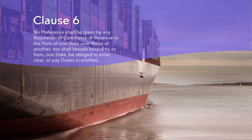Clause 6 is also known as the No Preference Clause for ports. It prohibits Congress from favoring one state over another in terms of commerce or revenue by regulating the ports or imposing duties on vessels. This clause was intended to prevent discrimination and promote free trade among the states.